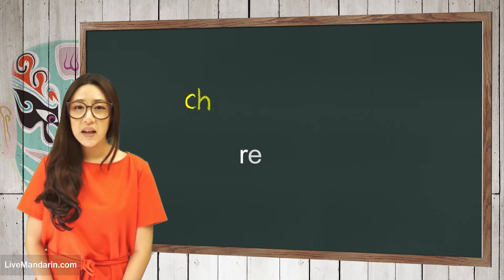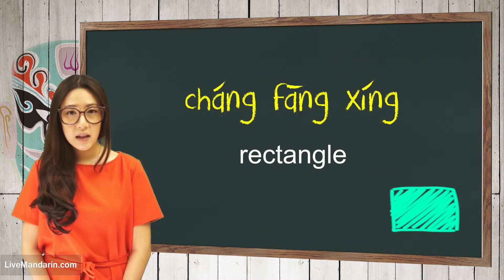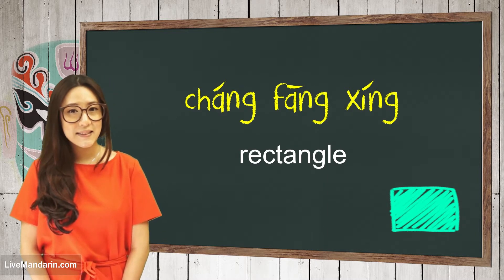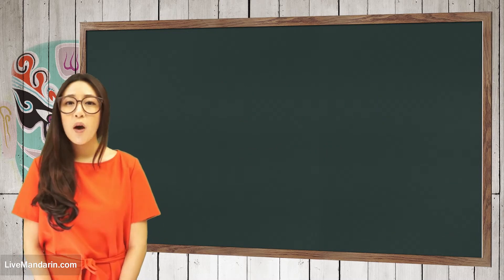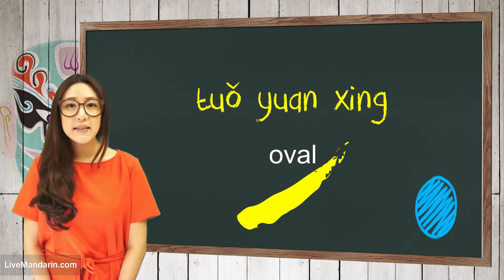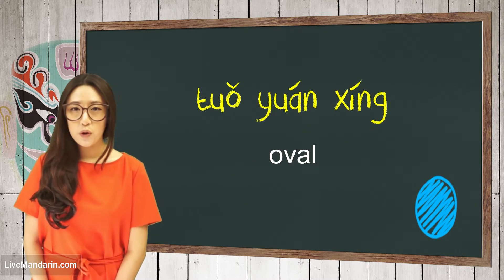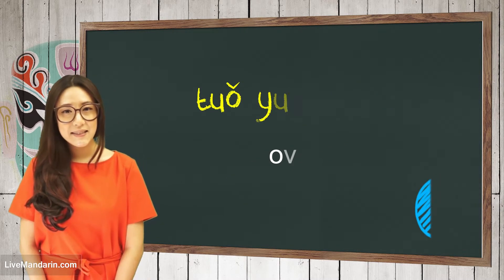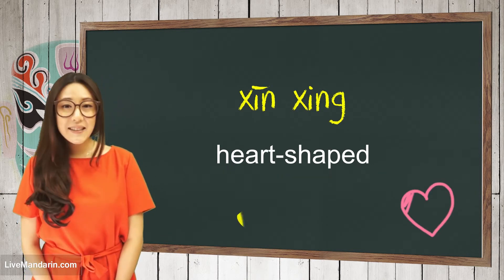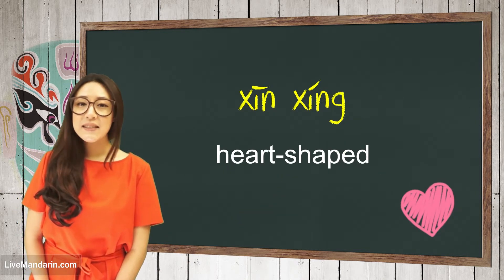Rectangle — 長方形. Oval — 橡圓形, 橡圓形. Heart shape — 星形, 星形.